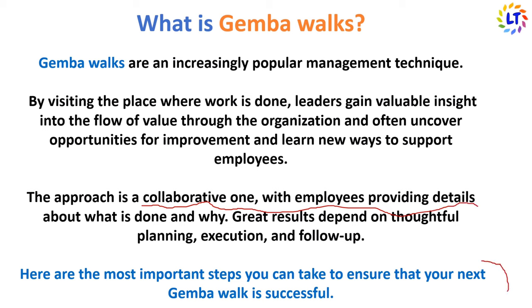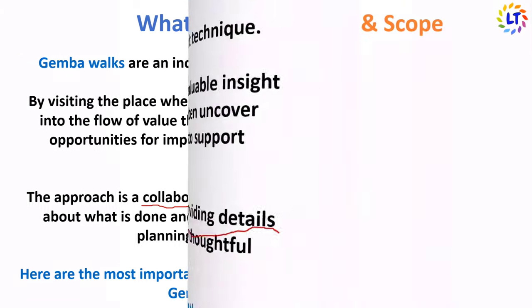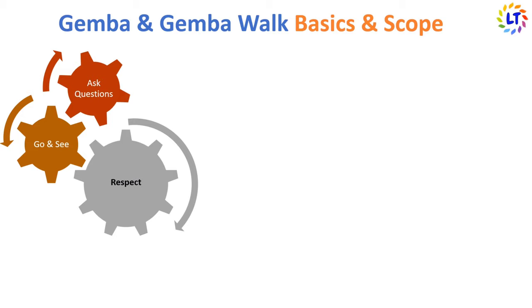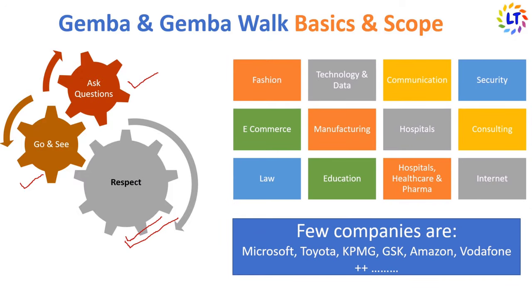Gemba Walk is a collaborative approach in which employees provide detail about what is done and why it's done. The basics are: first, go and see — take the time to watch how a process is done; then ask questions by talking with those who perform the job, but always remember to respect the employees. A common misconception is that Gemba Walk is only applied in manufacturing, but it has been implemented in many industries like technology, e-commerce, hospitals, law, and more.